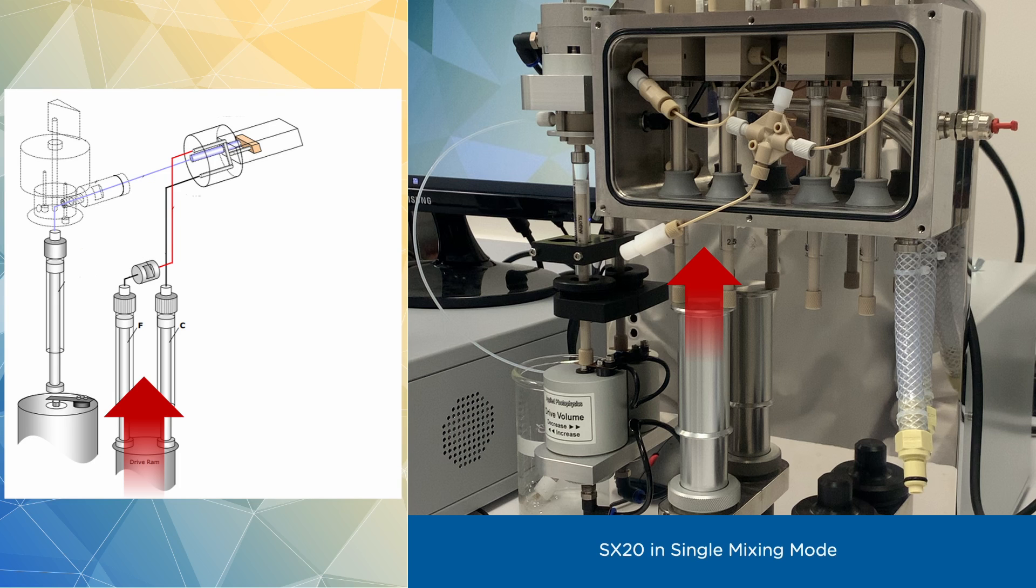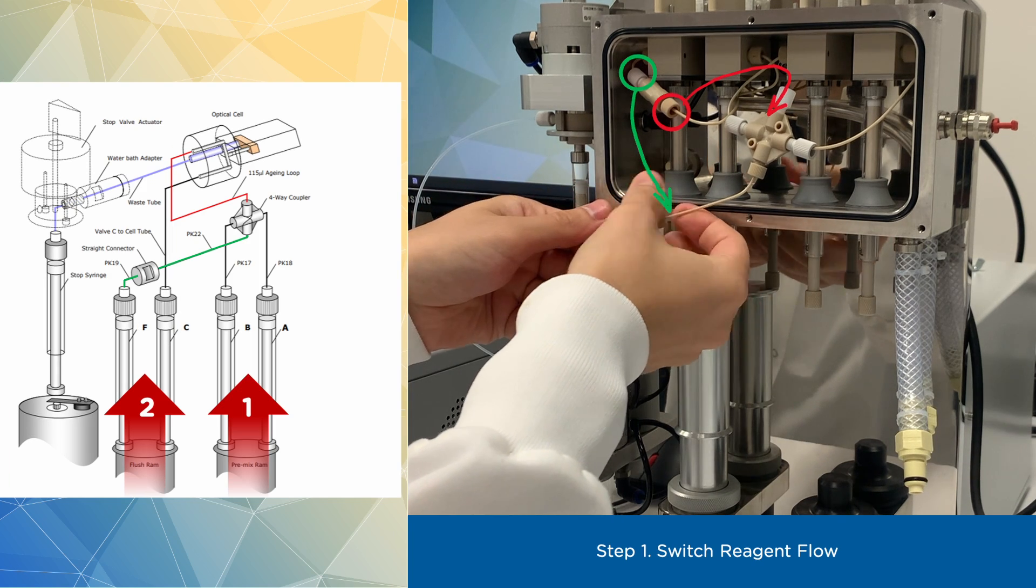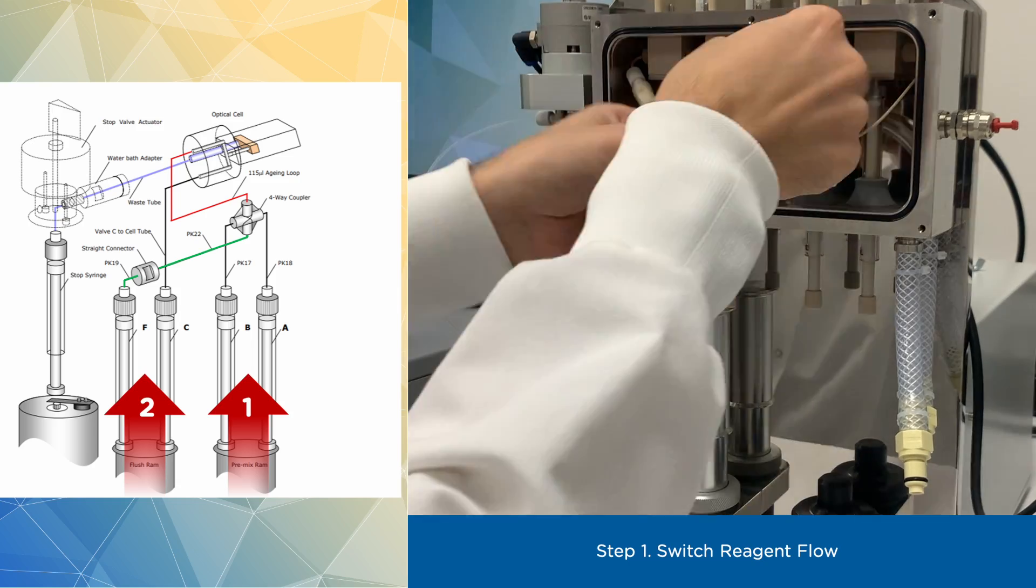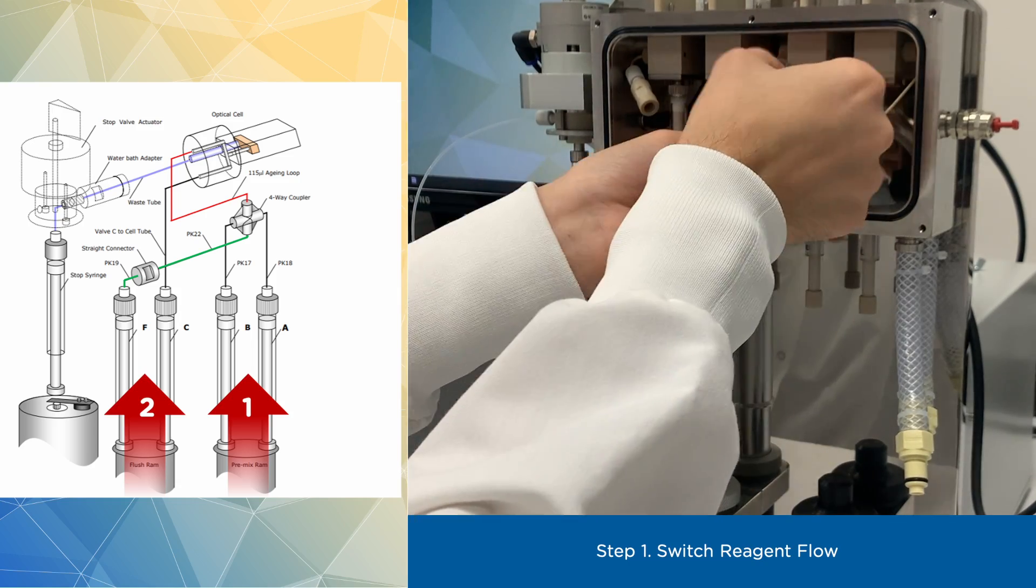Here is our instrument in a single mixing configuration. To switch to sequential mode, just follow these basic steps. First, switch the reagent flow by disconnecting flowline from the leftmost syringe and attaching one end to the top of a 4-way connector and the other end to the bottom.